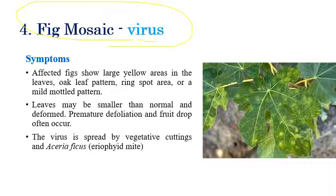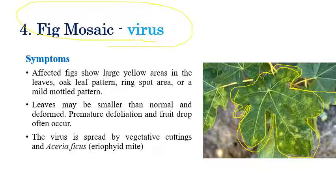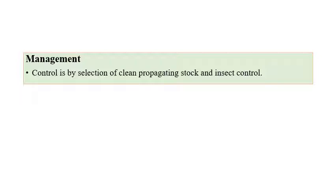The next disease is fig mosaic, caused by fig mosaic virus. The name itself indicates that mosaic patterns can be seen — alternate green and yellow patches. In advanced stages, the entire leaf is converted to yellow in color. Leaf size can also be reduced compared to normal leaves, and defoliation and fruit drops can be observed in later stages. This virus is mainly transmitted by vegetative cuttings and the eriophyid mite Aceria ficus. Management involves proper selection of clean propagative stock material and control of the eriophyid mite.